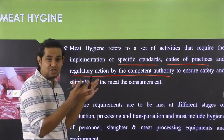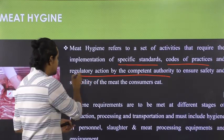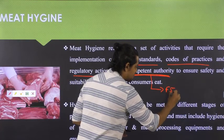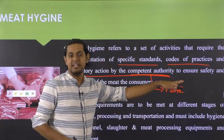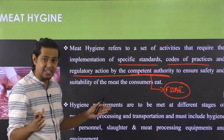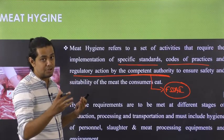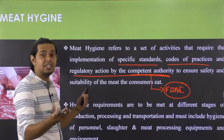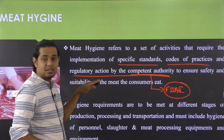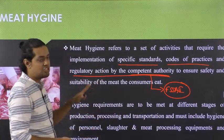Meat hygiene is a set of activities governed by a competent authority that industry must legally abide by. In the case of India, this regulatory authority is FSSAI — the Food Safety and Standards Authority of India — which provides rules, regulations, and established standards that every meat processing unit must meet, ensuring that products on the market do not cause any problem for the consumer after consumption.